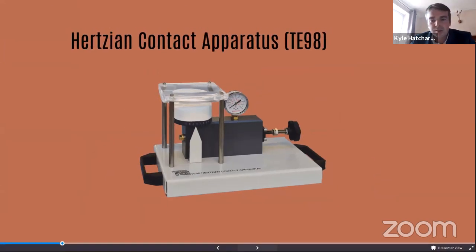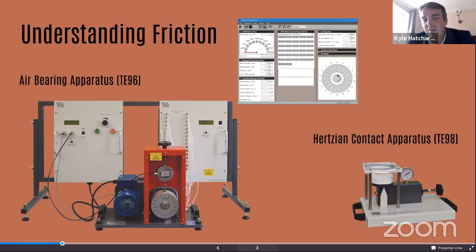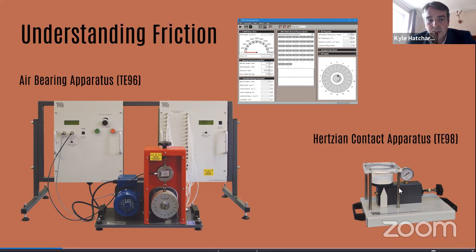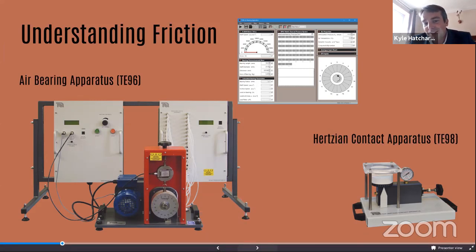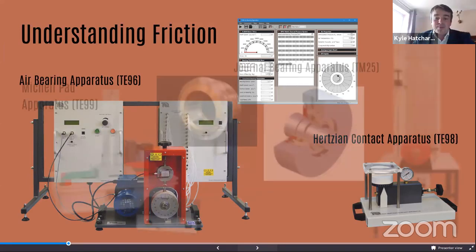Coming back to Young's modulus and Poisson's ratio — if you're talking about plasticity and elasticity and how those materials behave, it's critical in the sense that if you push that material beyond its elastic region, it's not going to return to its original state, therefore it's deformed and you won't be able to reuse that piece of material. However, within this piece of apparatus the material used is not deformed beyond its elastic limit, which allows repeatable results — so you don't need to change the specimen between experiments.